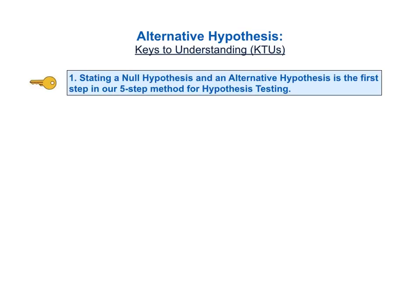Let's go through the list fairly quickly and then follow that with a detailed explanation of each key. KTU number one is stating a null hypothesis and an alternative hypothesis is the first step in our five-step method for hypothesis testing.